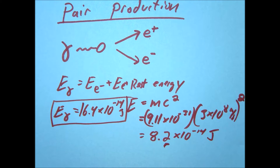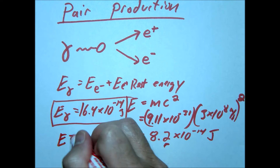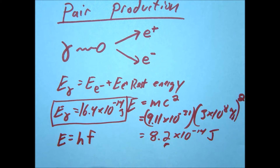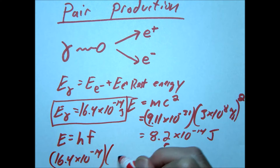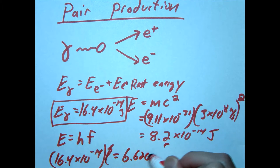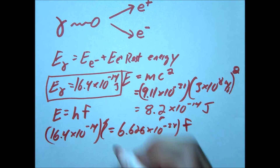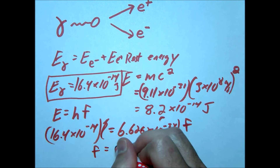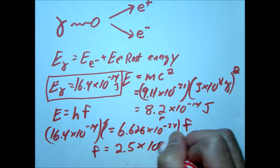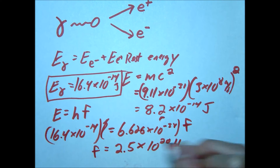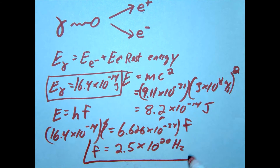If we wanted to convert that to a frequency, we can simply use E equals hf. Using Planck's constant 6.626 times 10 to the negative 34, we can calculate the frequency. Our frequency is about 2.5 times 10 to the 20 hertz. You can see how high this is — that's why this will only happen with gamma rays or higher. Notice that if this were a proton-antiproton pair, you would need even more energy.